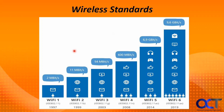Now let's talk about the different wireless standards. As you can see on the timeline, the speeds of each standard have been increasing over time. You may have heard terminology like the 802.11g standard, which applies to Wi-Fi 3 with a speed of 54 megabits per second, released in 2003. As of this video, we're currently using Wi-Fi 6, 802.11ax, which came out in 2019 and offers much faster speeds than previous generations.